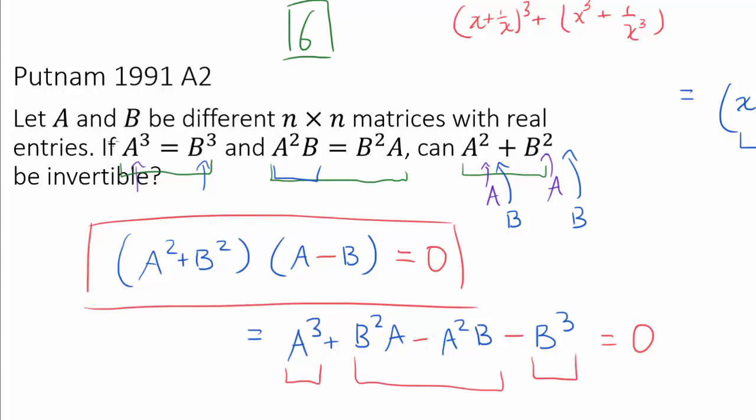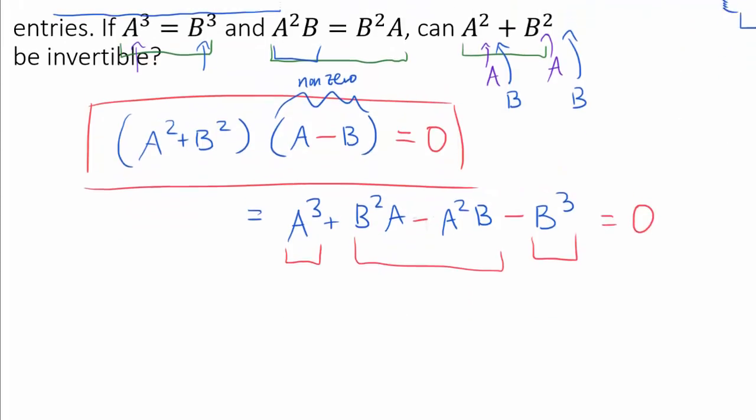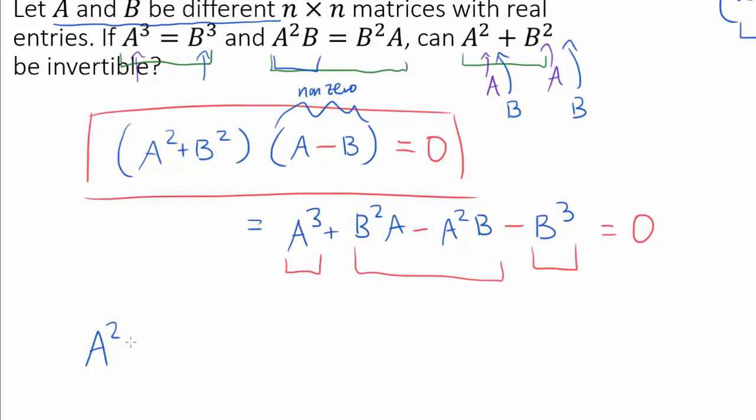Why are we done? Because we know A and B are different matrices. So we know A minus B is a non-zero matrix. You may still be confused on why we are done. Well, A squared plus B squared cannot be invertible. So we know A squared plus B squared cannot be invertible. Why?